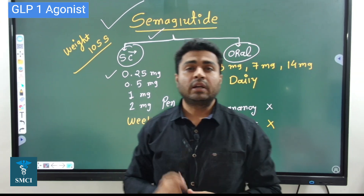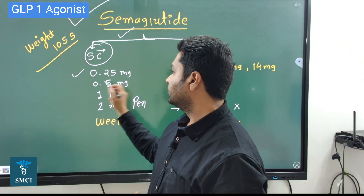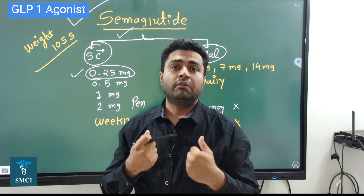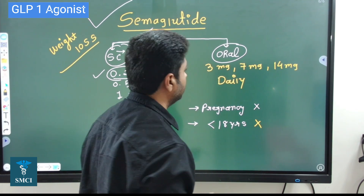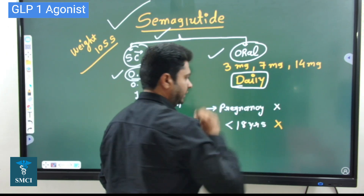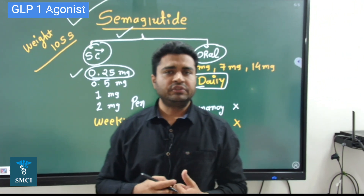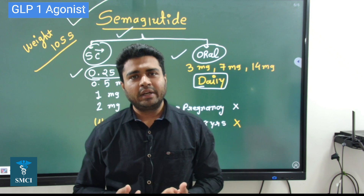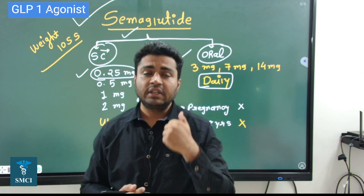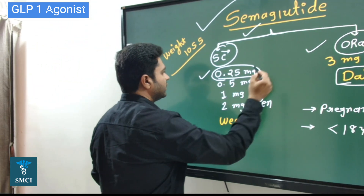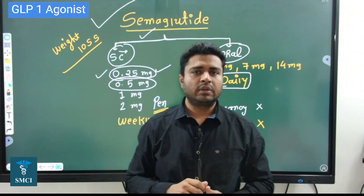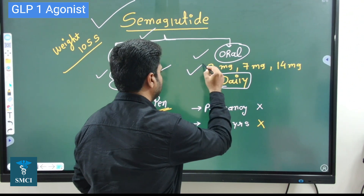The duration of action of semaglutide is one week. If you take a subcutaneous injection of 0.25 mg, that will work for one week, so patient compliance will be very high. If the patient wants to take semaglutide orally, oral preparations are available in doses of 3 mg, 7 mg, and 14 mg, but the oral dose should be taken daily. Semaglutide is also a GLP-1 analog, so side effects are the same as liraglutide — nausea, vomiting, and diarrhea may occur. These drugs are also approved for anti-obesity as they suppress appetite and increase gastric emptying. The starting subcutaneous dose is 0.25 mg, which can be increased to 0.5 mg, administered with a pen device.